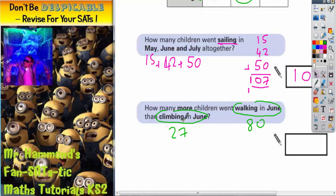We want to find how many more children went walking than climbing, so we need to find the difference, the gap. How many more is it from 27 up to 80?